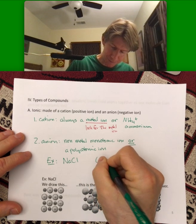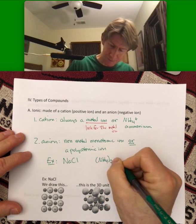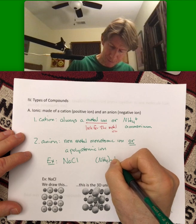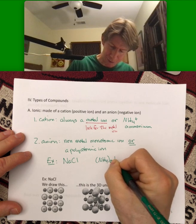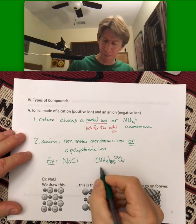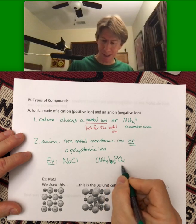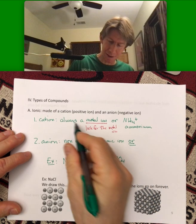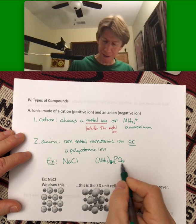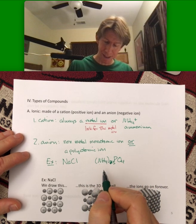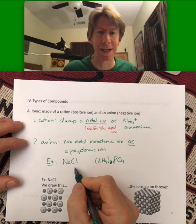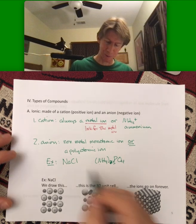So, another example. Ammonium phosphate. Ammonium is our positive ion. Phosphate is a polyatomic ion. Oh, I forgot to mention that chloride, Cl⁻, is a monatomic ion as well.